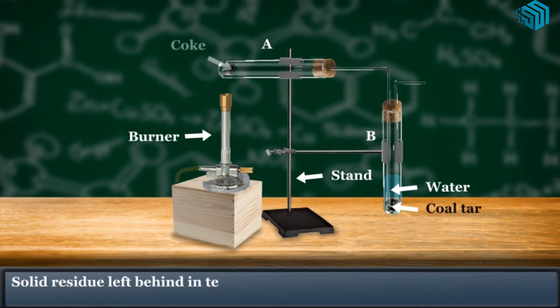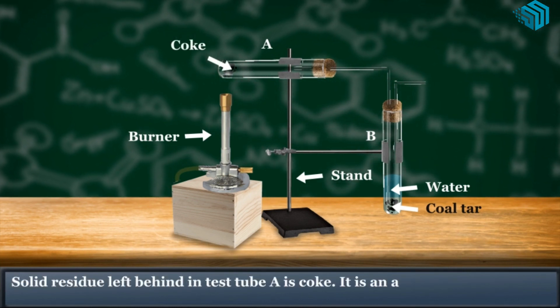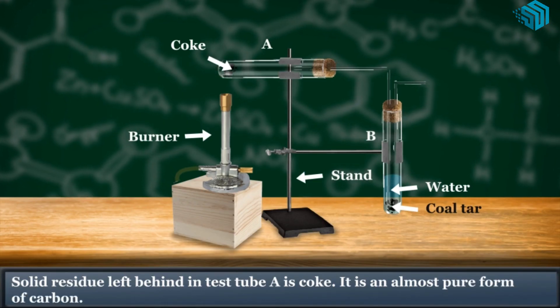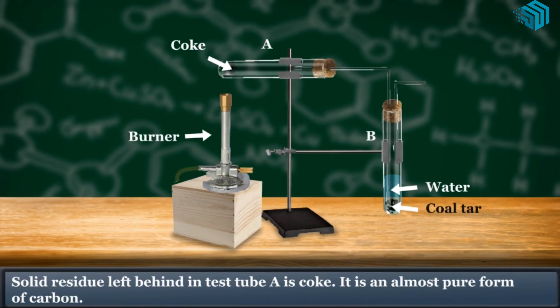Solid residue left behind in the test tube A is coke. It is an almost pure form of carbon.